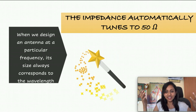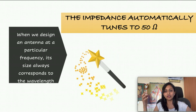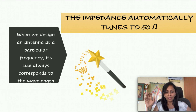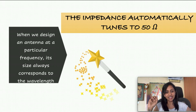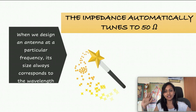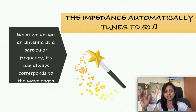This is really a fascinating thing. When I started working on antennas, these small things really fascinated me. Am I doing anything explicitly to match at 50 ohms? No. What did I do? I was given the frequency, I designed my size according to the wavelength — that is all. The impedance automatically got matched, so it is definitely absorbing that frequency.